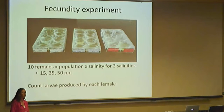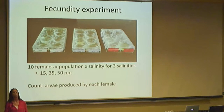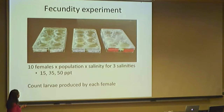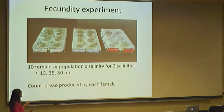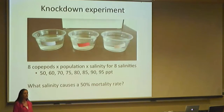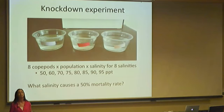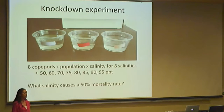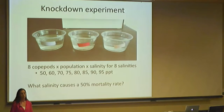To get at these questions, I've taken a couple of different approaches. The first is a fecundity experiment: I took ten females per population per salinity and reared them in different salinities — 35 PPT is typical seawater, 50 is higher, and 15 is brackish — and counted the number of larvae produced by each female. The second was a knockdown experiment to figure out what salinity causes a 50% mortality rate, using eight copepods per population across eight different salinities and monitoring mortality levels.